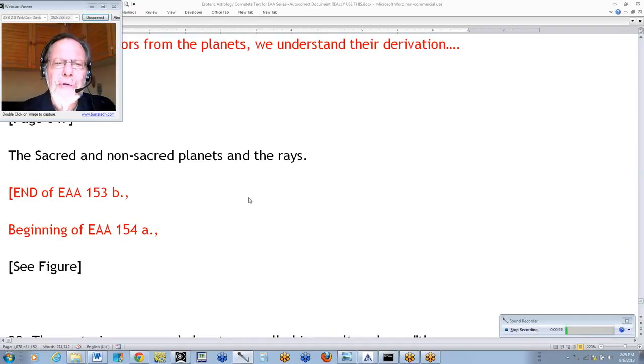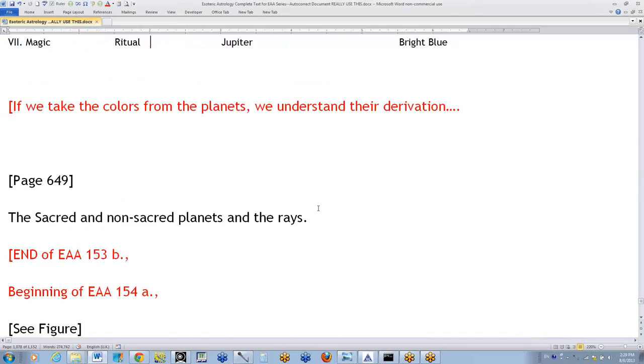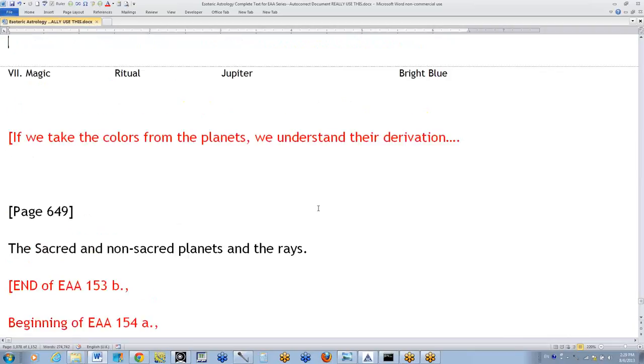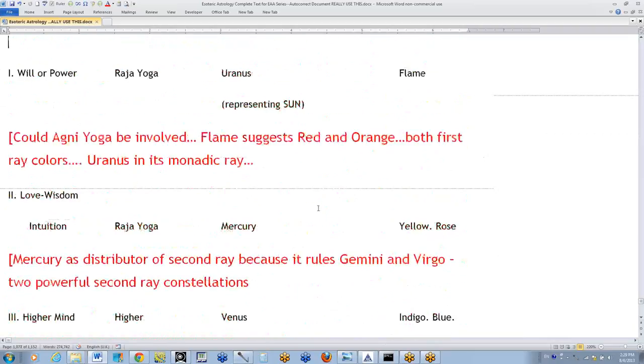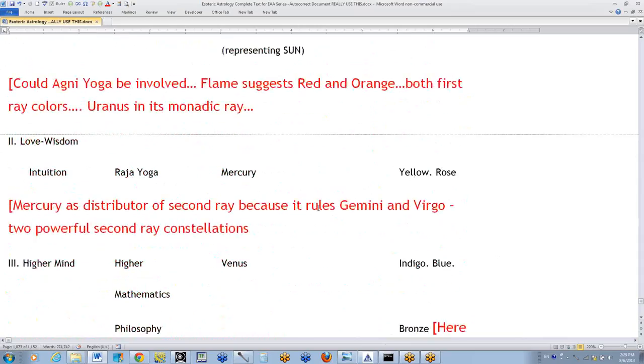We're on Esoteric Astrology 154a. I think I made a mistake earlier, I wrote the wrong figure. Anyway, we've been through this chart by Annie Besant where the colors may well relate to colors prominent in a previous solar system. And where there are some unusual rulers given for the various aspects and principles. Such as Mercury for Love Wisdom. Well, it's certainly the Lord of Wisdom in a sense, but not so much the Lord of Love.